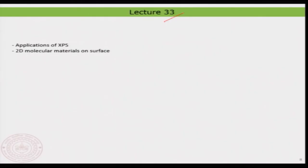Hello everyone, welcome back to lecture 33. In this lecture we will continue what we have been discussing in the previous class. It was about adsorption of carbon monoxide on two surfaces. We will basically try to summarize that and make our understanding clear. And then we will switch to a new topic — two-dimensional molecular materials prepared on surface, which is a kind of new emerging material.